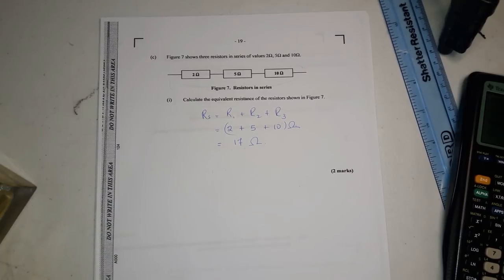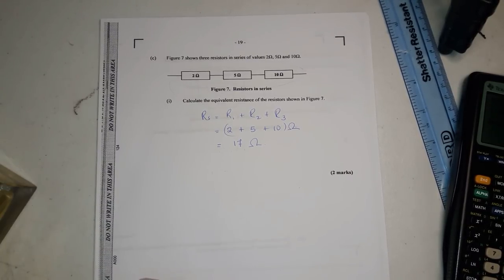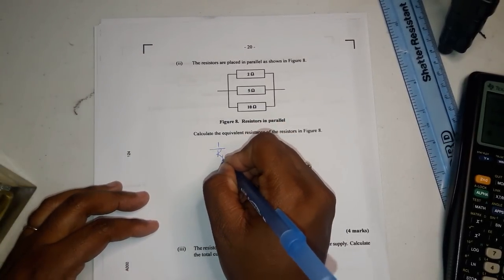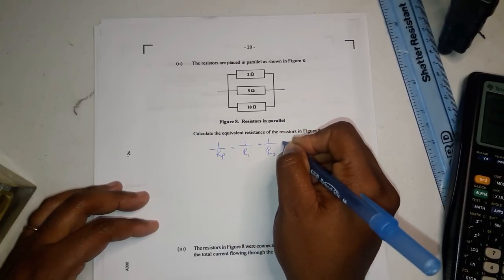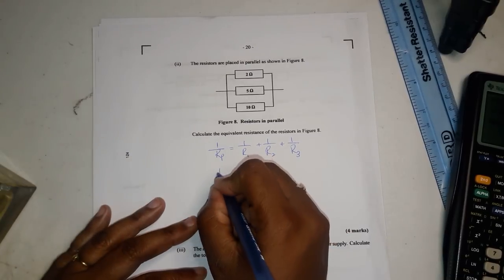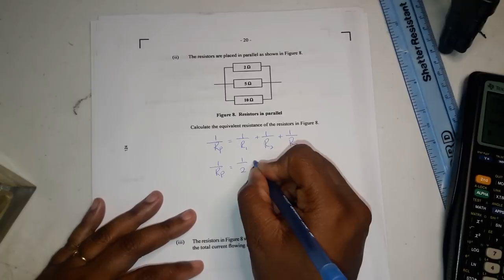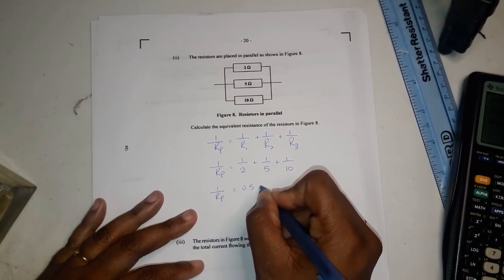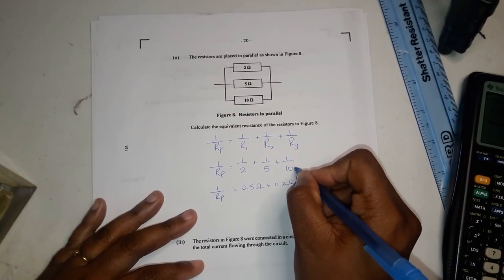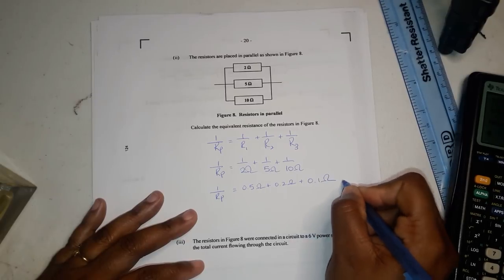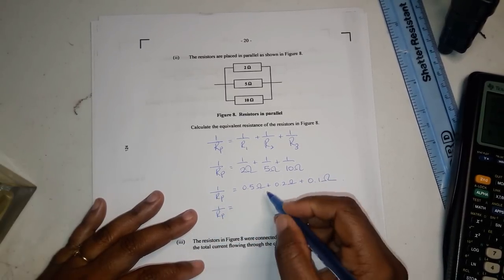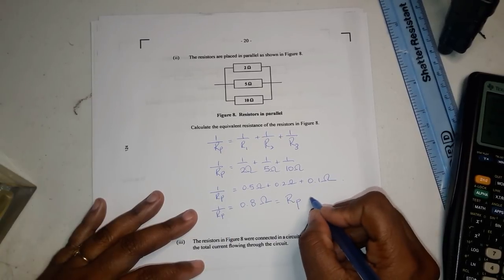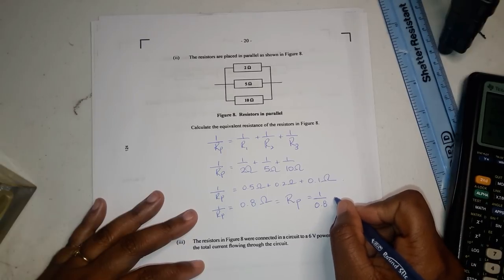Then the next question deals with them in parallel. The same resistors are placed in parallel. And what we see here is that we could use one over Rp equals one over r1 plus one over r2 plus one over r3. And so we're going to just put it in accordingly one over two plus one over five plus one over ten. And this will give us one over Rp equal to 0.5 ohms plus 0.2 ohms plus 0.1 ohm. And one over Rp again will be equal to 0.8 ohms but you must know that you're going to transpose that up and this come down equal to one over 0.8 and you get 1.25 ohms.